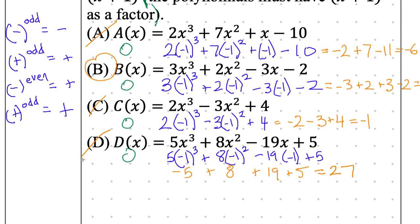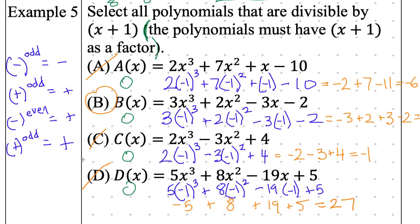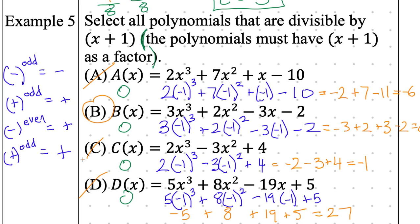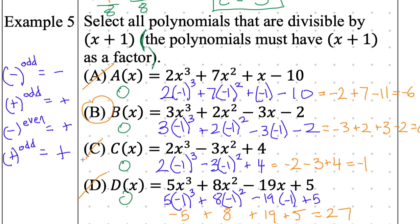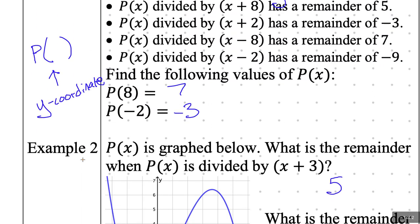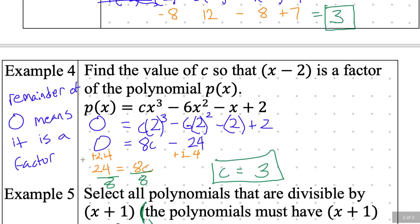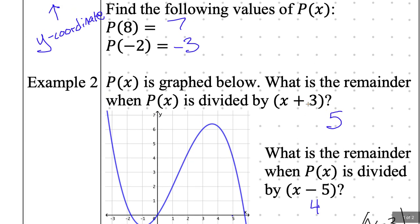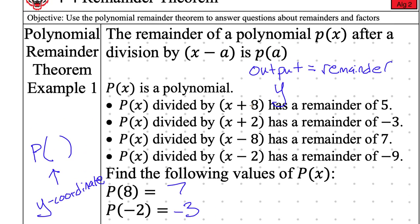Summary: plug in the opposite — if I had positive 1, plug in negative 1. The output slash y is equal to the remainder. That concludes the hardest lesson of unit 4. Our test is coming up soon, and this is the last new thing I'm teaching for this unit.